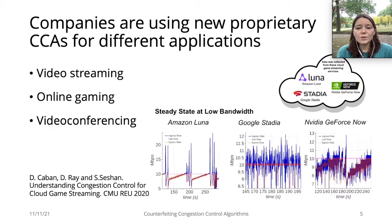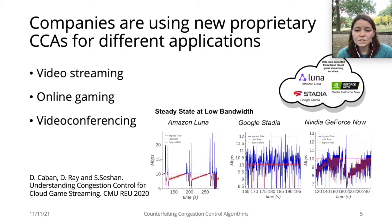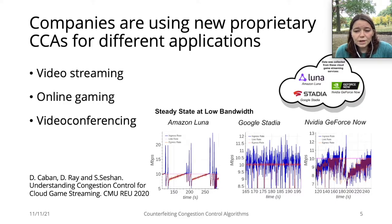For example, last summer, researchers at CMU analyzed the CCAs being used by three different video game engines, and concluded that these proprietary CCAs do not fit any previously known algorithms. Because these CCAs are closed source, the insights they were able to get were limited. So how can we hope to analyze properties of unknown CCAs if the companies don't release them?